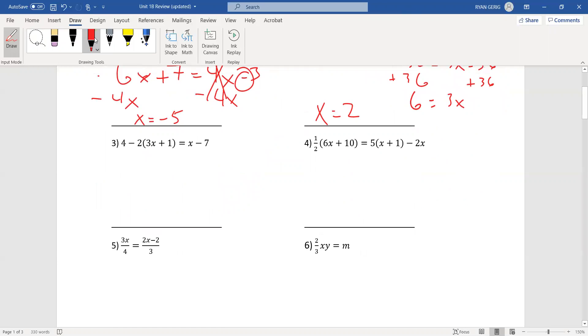Number 3. I need to distribute a negative 2. Make sure you do the negative 2. So, that's 4 minus 6x. Negative 2 times 1 is negative 2. Equals x minus 7. Combine like terms. Or, you could just add 2 to both sides. Subtract 4. But, I like to combine my like terms. So, 4 minus 2 is positive 2. Minus 6x equals x minus 7.